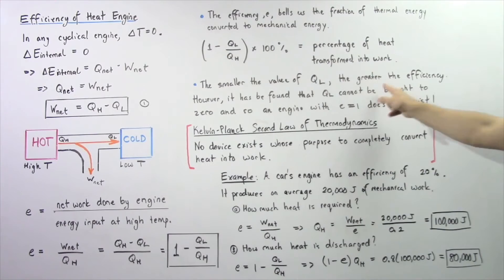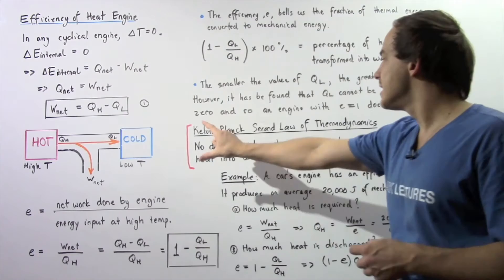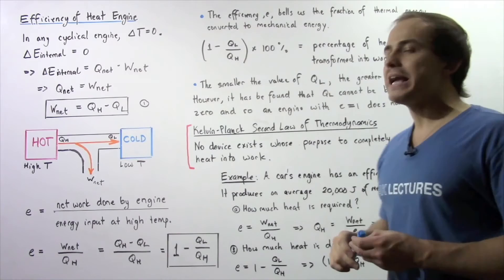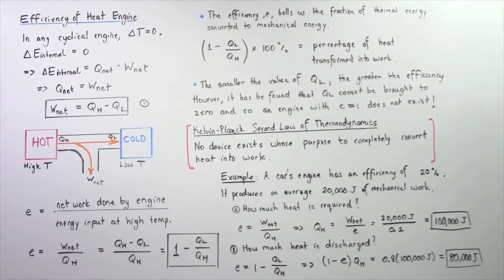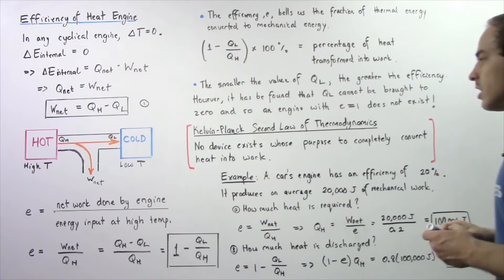However, it has been found that Q_L cannot be brought to zero, and so an engine with E equal to 1 does not exist. This directly leads to the Kelvin-Planck statement for the second law of thermodynamics: no device exists whose purpose is to completely convert heat into work. Basically, an engine with an E value of 1 does not exist.